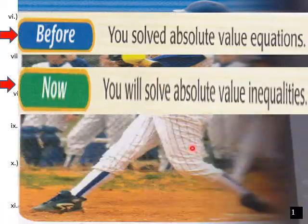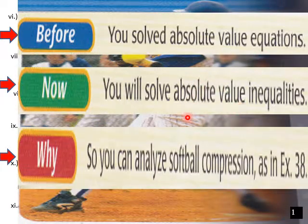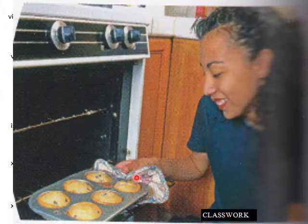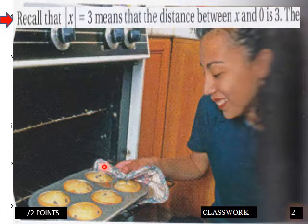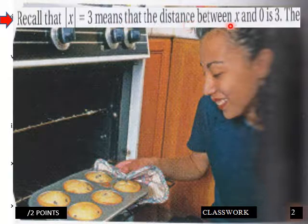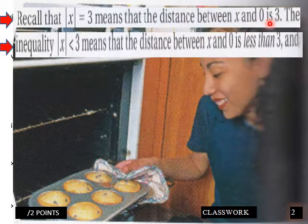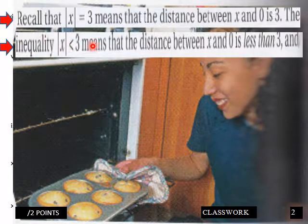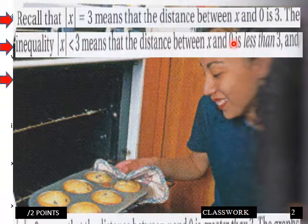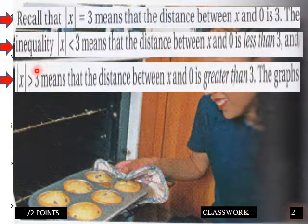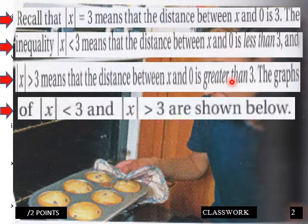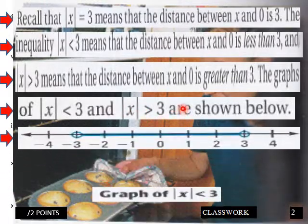Into our lesson: you've solved absolute value equations; now you will solve absolute value inequalities. Recall that |x| equals 3 means the distance between x and 0 is 3. The inequality |x| less than 3 means the distance between x and 0 is less than 3, and |x| greater than 3 means the distance between x and 0 is greater than 3. The graphs of |x| less than 3 and |x| greater than 3 are shown below.